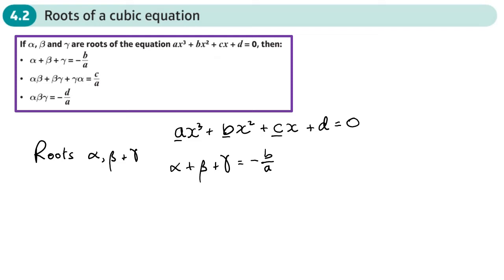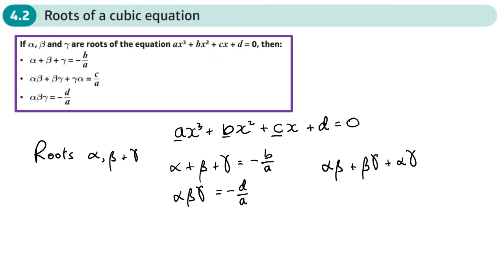The sum of those roots — alpha plus beta plus gamma — is negative b over a, the same as for the quadratic. The product of all roots — alpha times beta times gamma — is negative d over a (for the quadratic it was c over a, so it's slightly different). Then we have the sum of the products of root pairs: alpha beta plus beta gamma plus alpha gamma, and that equals c over a.